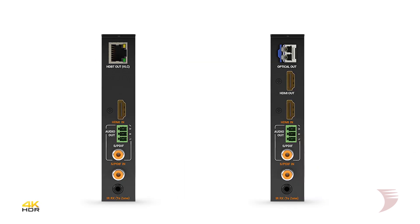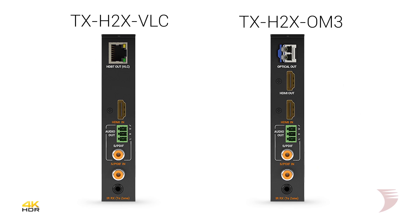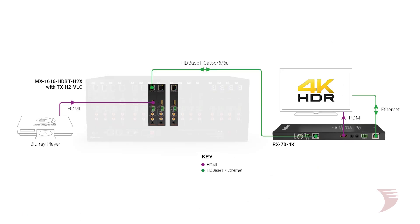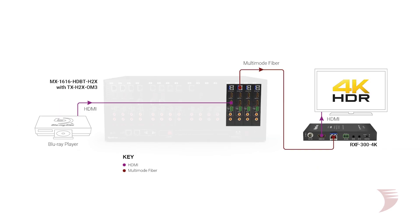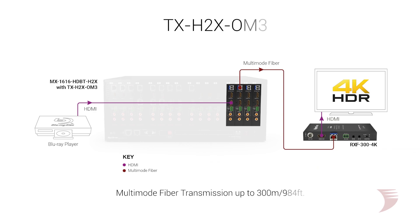The TX-H2X VLC and TX-H2X OM3 cards raise the 4K game with support for 18GB sources. Whereas the TX-H2X VLC features HDBase-T Class A transmission to 70 meters or 230 feet, the TX-H2X OM3 instead offers transmission over multi-mode fiber up to 300 meters or 984 feet.